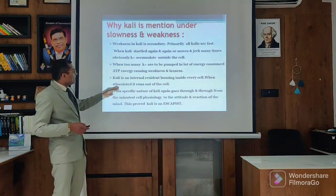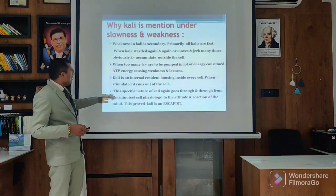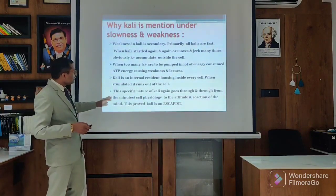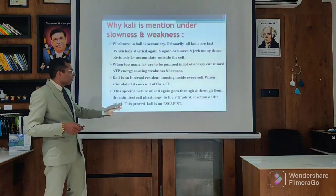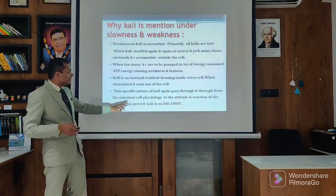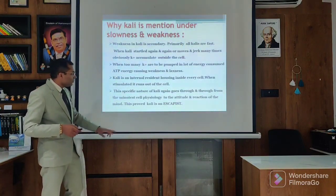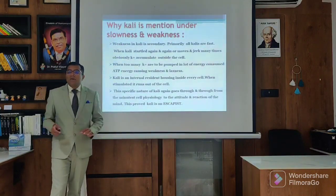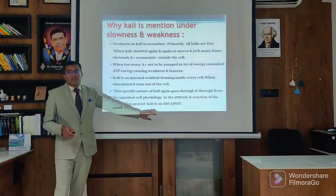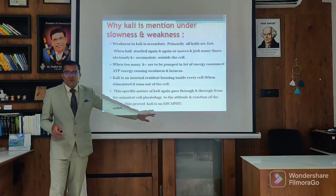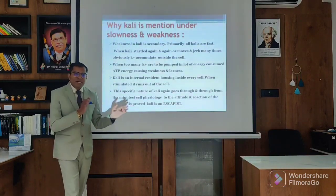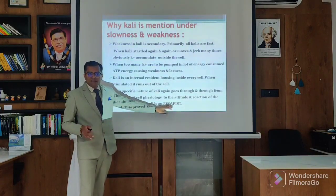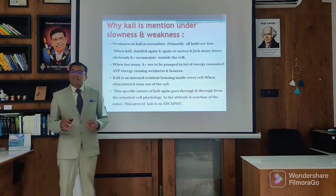Kali is an internal risk housed inside every cell. When stimulated it runs out of the cells. This specific nature of Kali goes through and through from minor cell physiology to the attitudes and reactions of the mind. This proves Kali Carb or the Kali group is escapist by nature. When you think escapist by nature, it means they are going away from the cells - going away from their environment, their family.